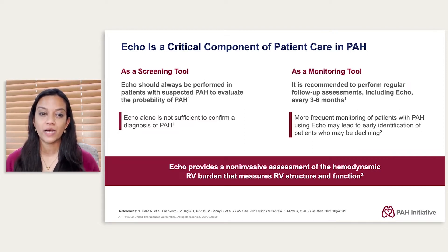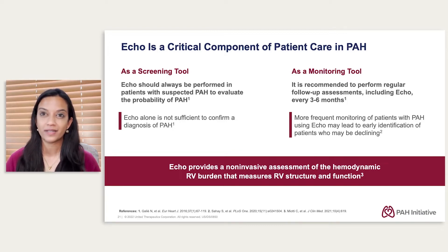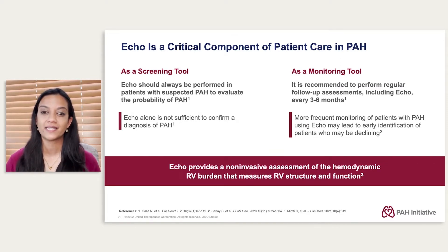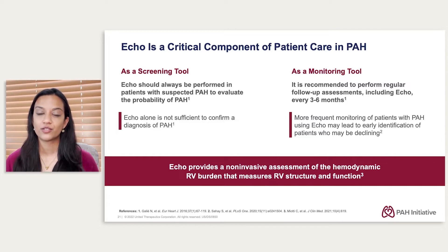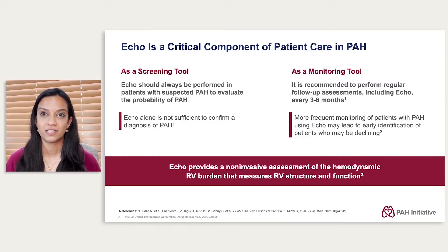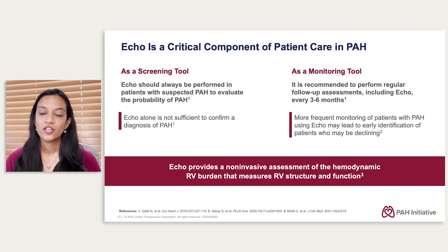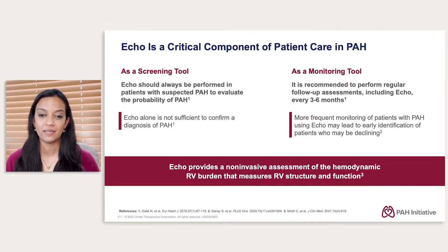As a screening tool, echocardiography can be very helpful if a patient is suspected to have pulmonary hypertension to evaluate the probability of PAH. ECHO is not sufficient alone, but it can tell us a lot more than was previously appreciated, and we'll talk about how to do that. There's also a monitoring role — once someone already has a diagnosis of PAH, monitoring is really critical and should be done with high frequency to identify early recognition of a patient's declining clinical status.